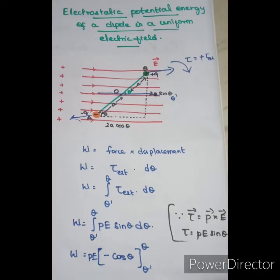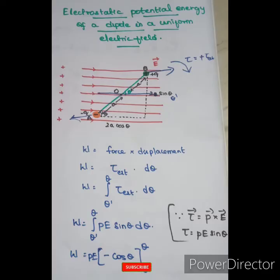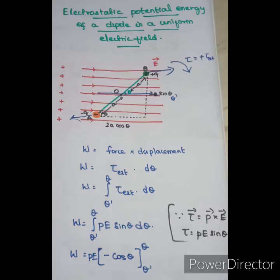So this is all about the diagram and our concept. Now we will derive the potential energy. The key point is the angle theta. We know that work is equal to force times displacement — that's the normal relationship between force and displacement.